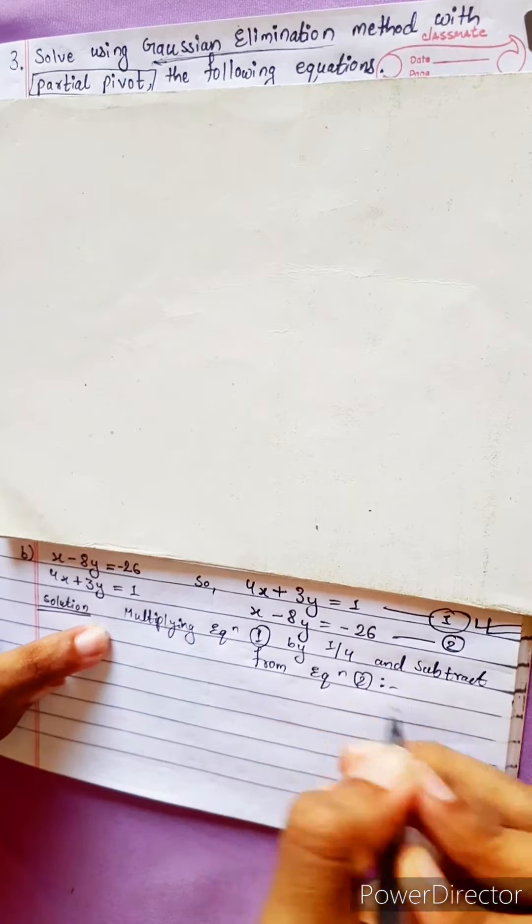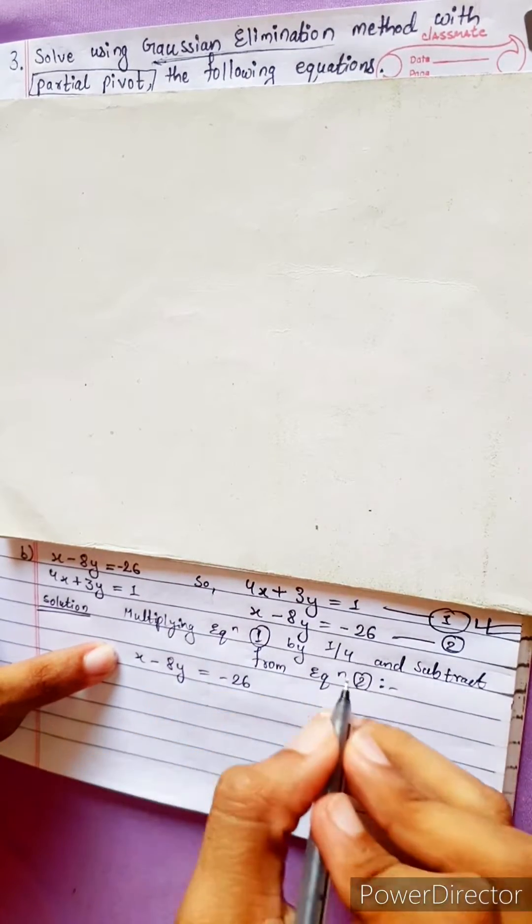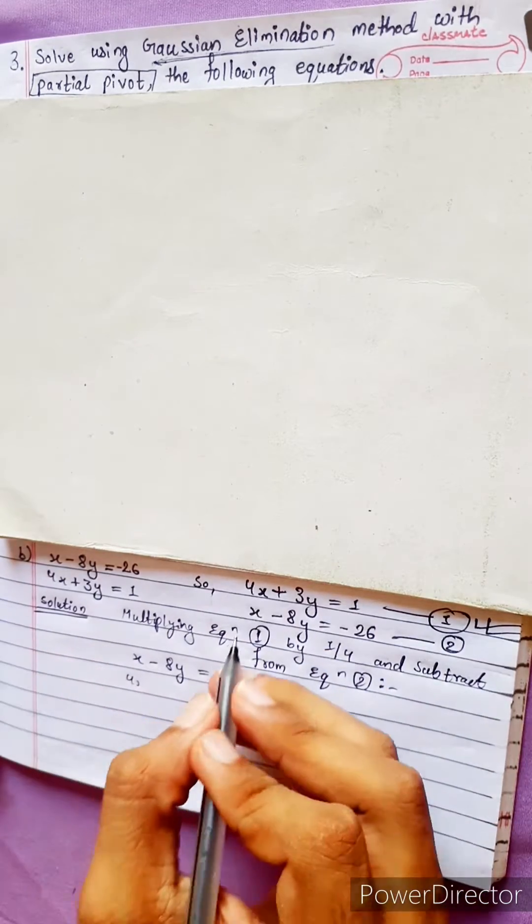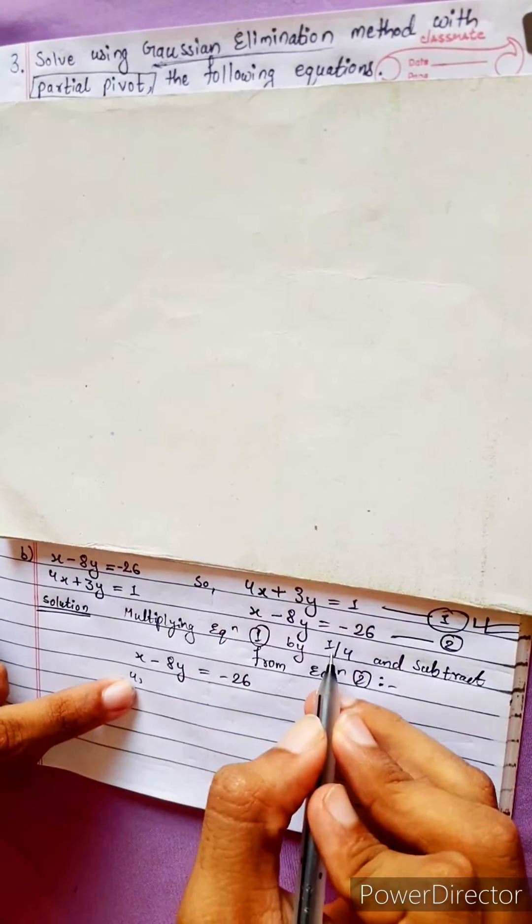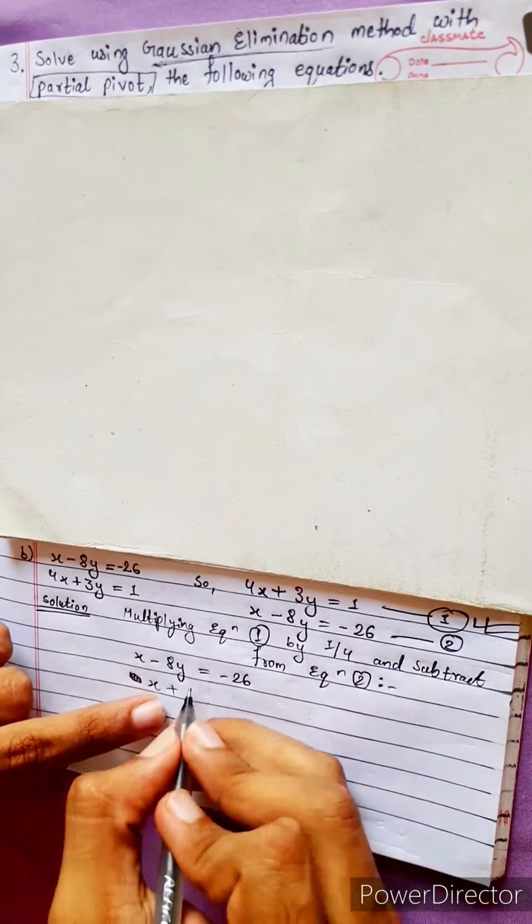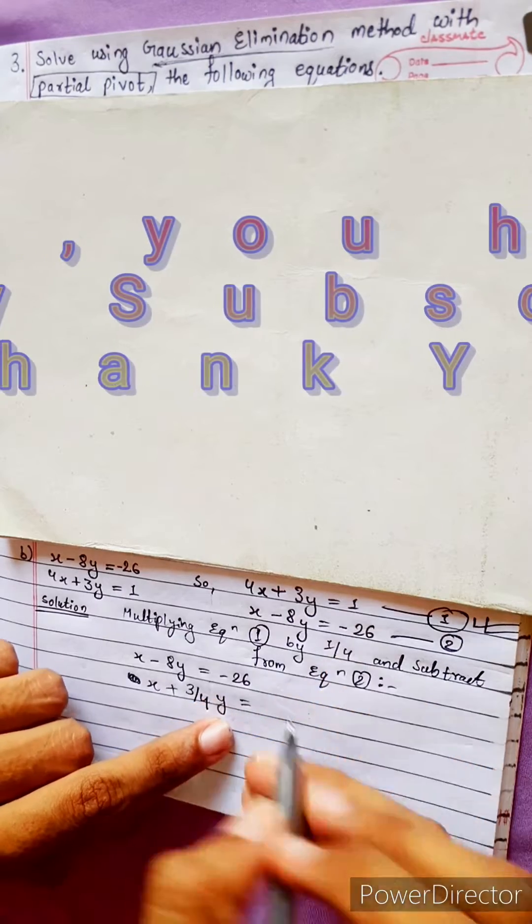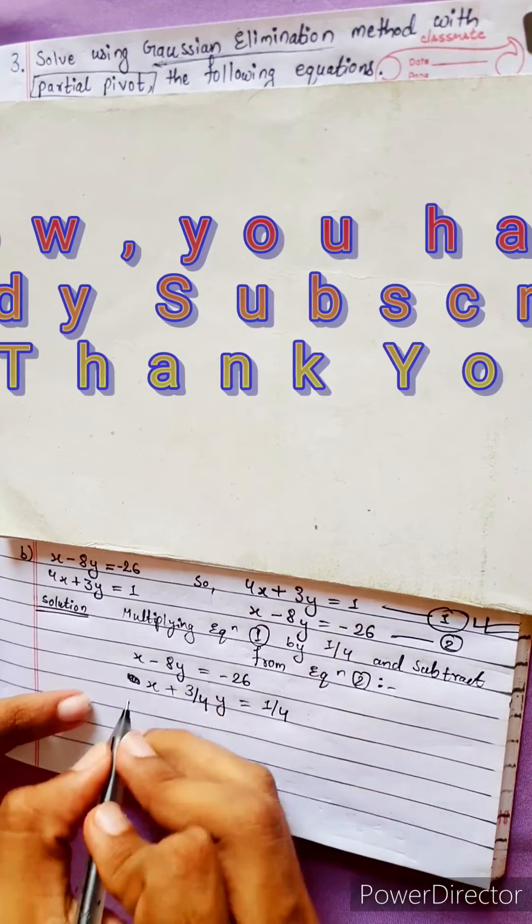So, we have to write equation 2 at first. x minus 8y equals to minus 26. Then equation 1 is 4x into 1 by 4, means only x. x plus 3 into 1 by 4, 3 by 4 y equals to 1 into 1 by 4. Now, subtract these two.